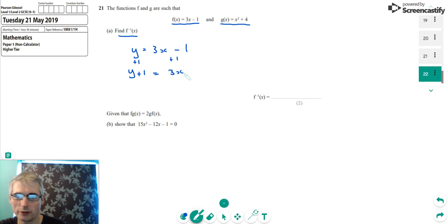And then we'd now need to divide both sides by 3, which means we would end up with y plus 1 over 3. The 3's would cancel and what that would give us would be that x is equal to y plus 1 over 3.